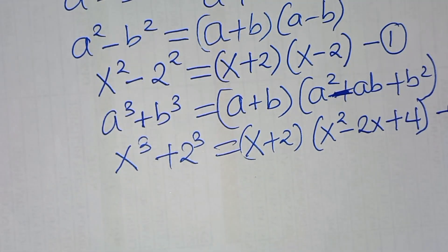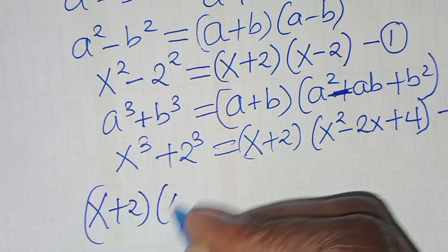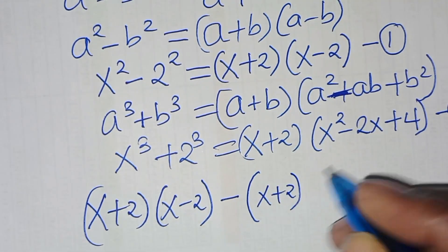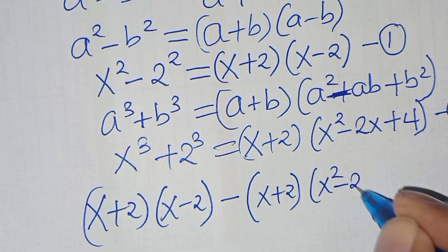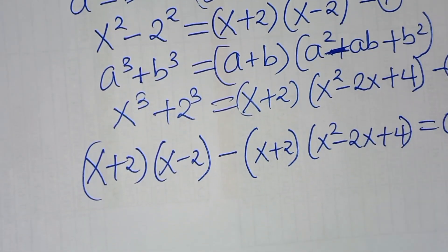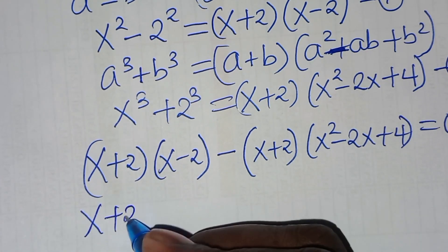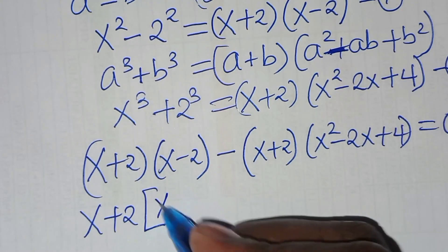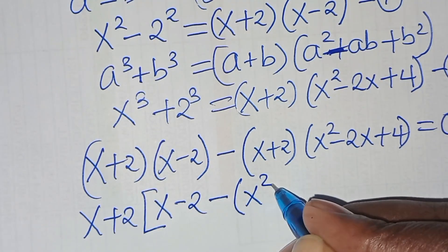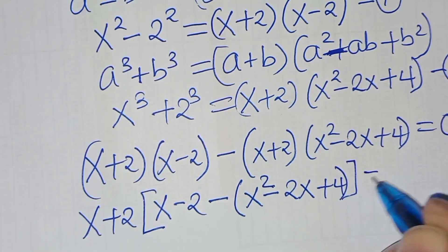Let's combine equation 1 and 2, so that now we have x plus 2 times x minus 2, then subtract x plus 2 times x squared minus 2x plus 4, this is equal to 0. x plus 2 is common here, so we factor out x plus 2, so that in the bracket we have x minus 2 subtract x squared minus 2x plus 4, this is equal to 0.